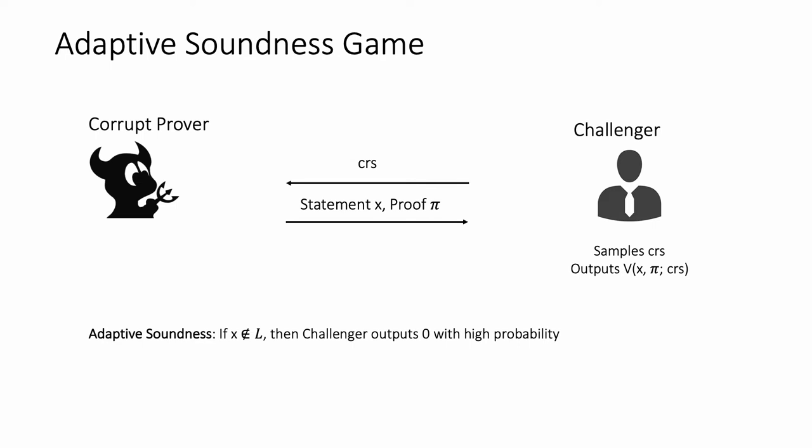We need three additional properties from our NIZK system. First, we need adaptive soundness. In this game, the prover is corrupt; the challenger samples the CRS and sends it to the prover. The prover can adaptively choose the statement x to be proven, computes a proof, and sends both the statement and the proof to the challenger, who runs the verifier algorithm. Adaptive soundness says that if x is not in the language, the challenger outputs 0 with very high probability.